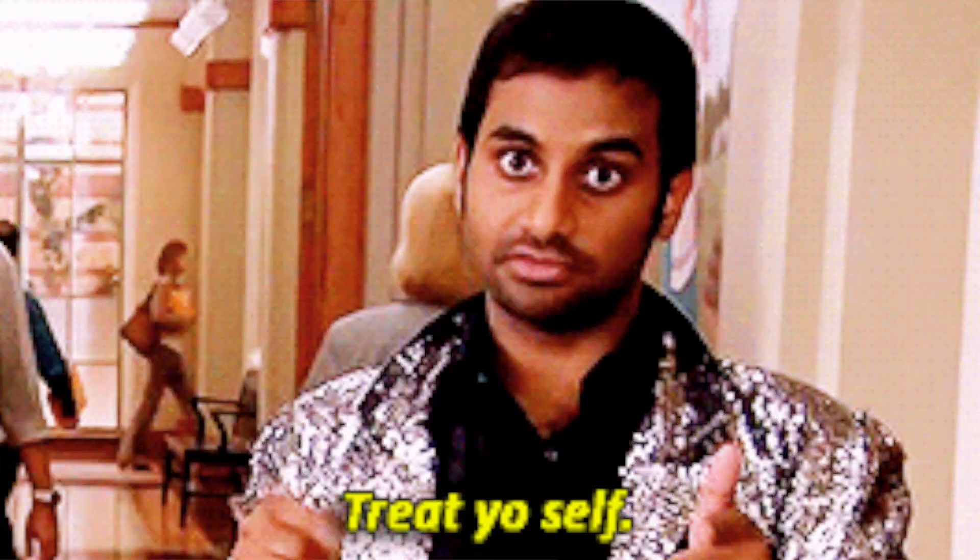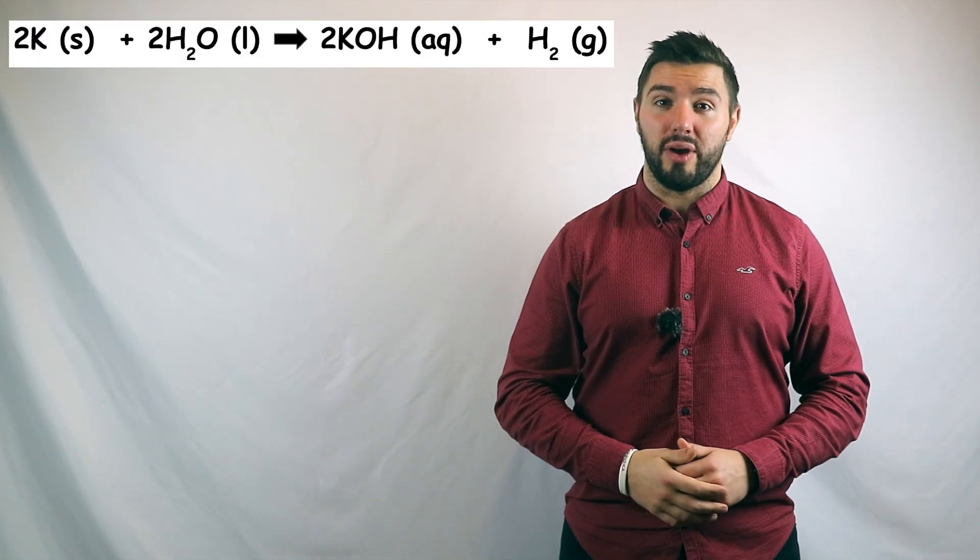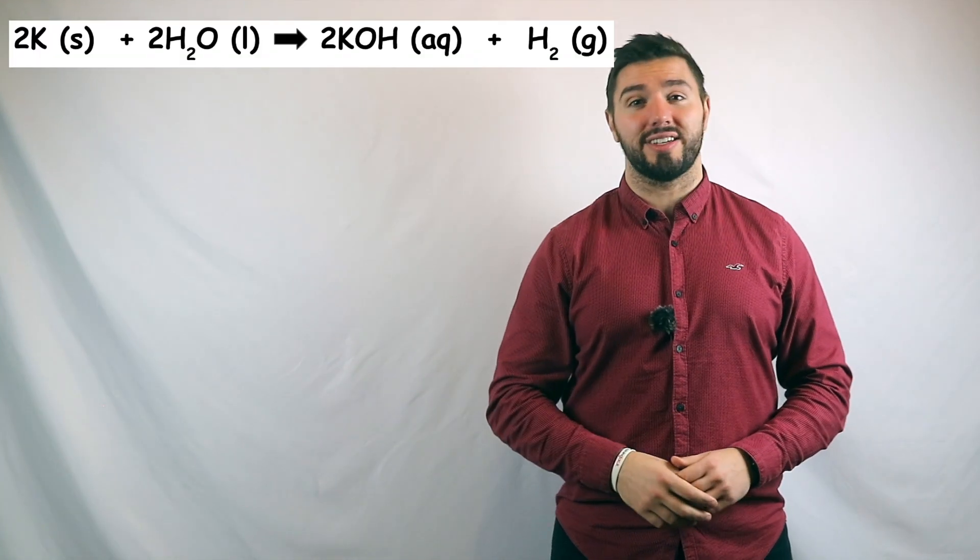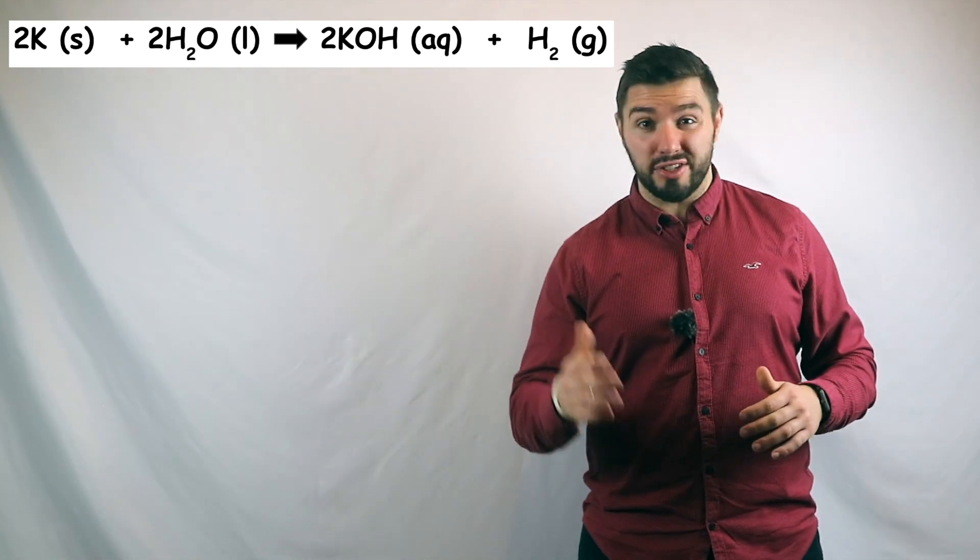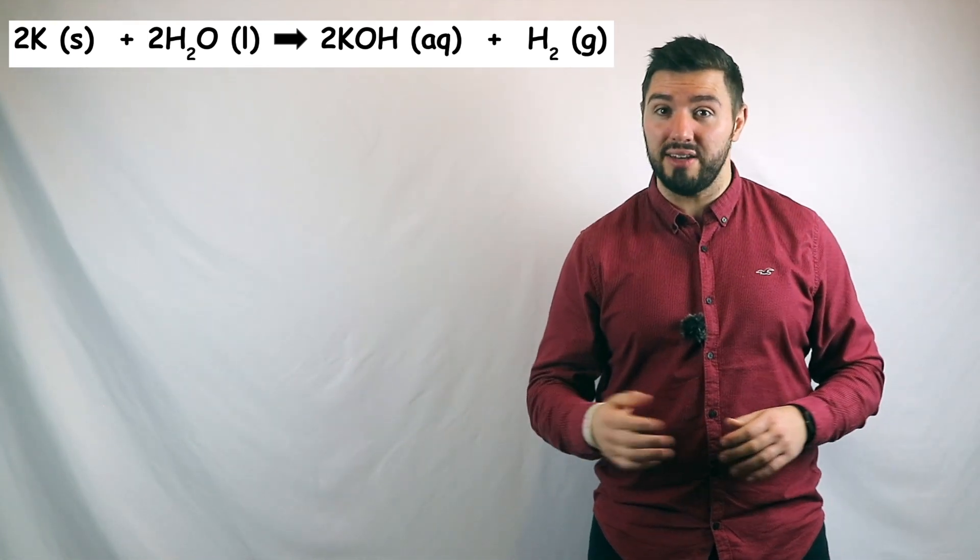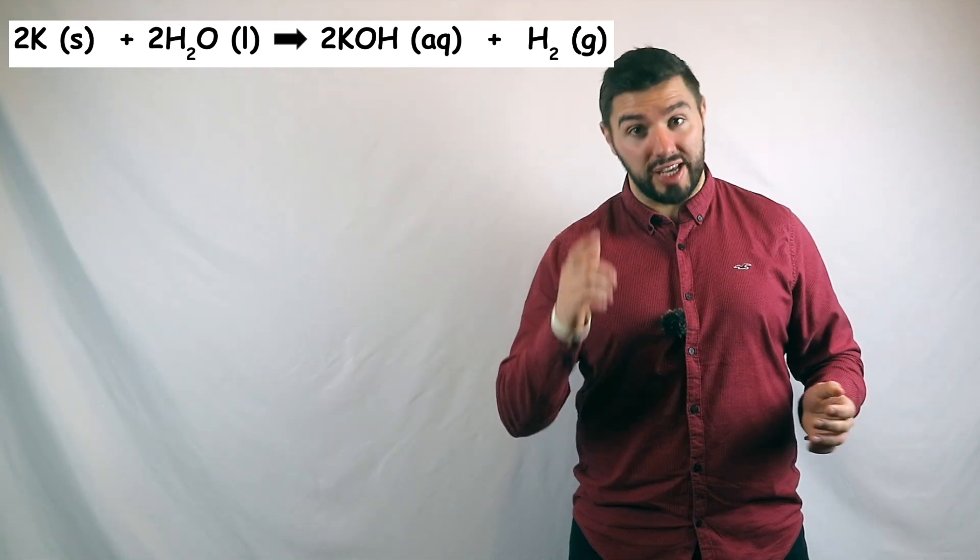Right, if you've hung around this long, you deserve that bonus tip. So sometimes in a symbol equation, they'll add in the state symbols as well. And for some reason in exams, students never seem to fully understand what all four of them mean. And make silly mistakes as a result. So keep an eye for them.